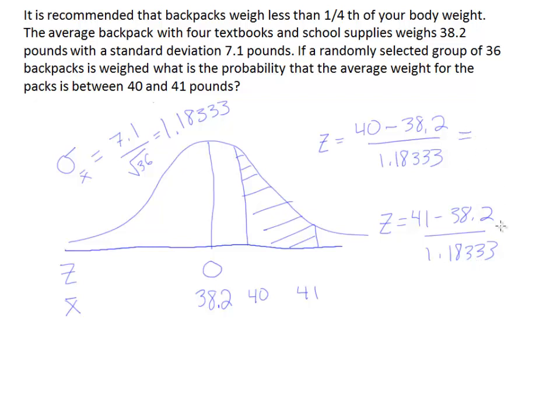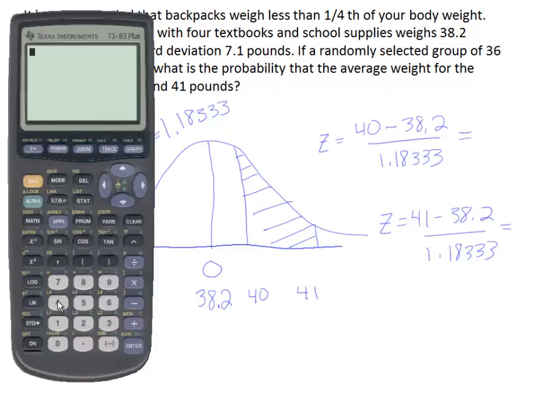Let's work both of those out, get our z-scores, and then we'll look them up on the chart. So for the first one, we'll have 40 minus 38.2. And if I hit enter, I get 1.8, and I'll divide that by 1.18333. So I get 1.52 for that first z-score.